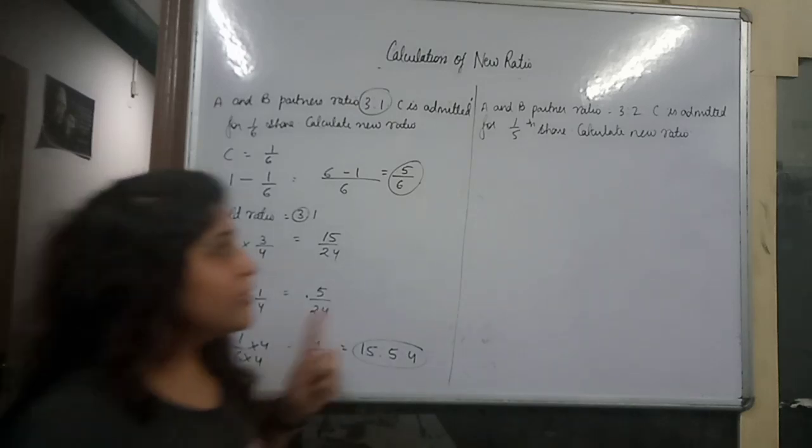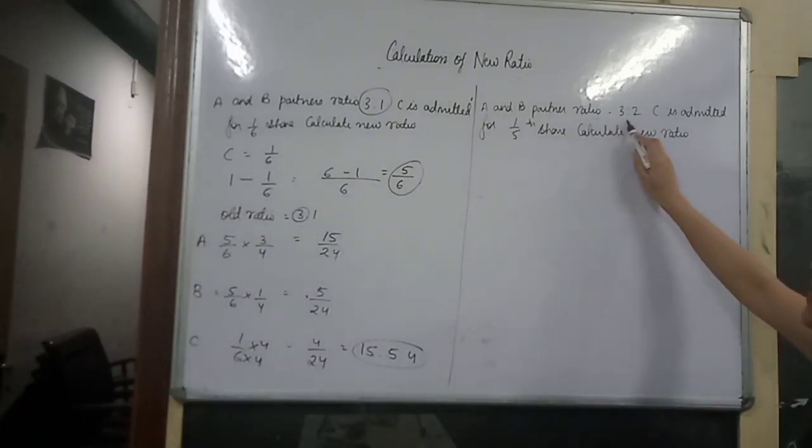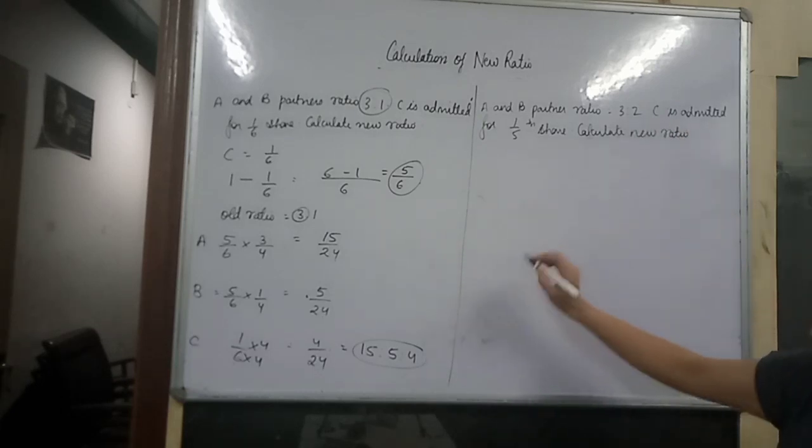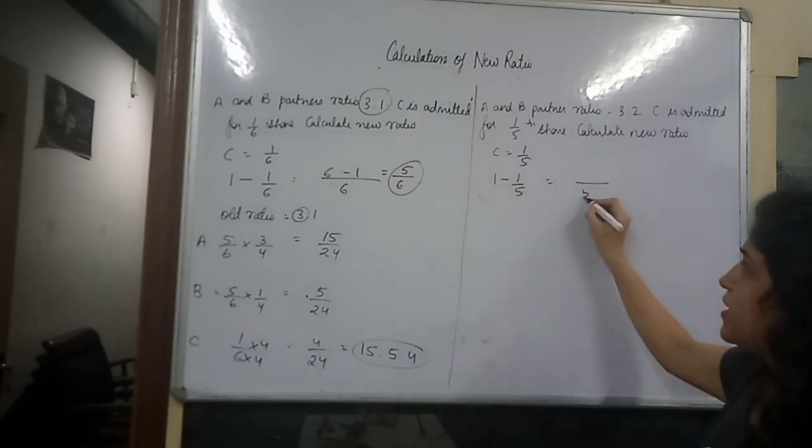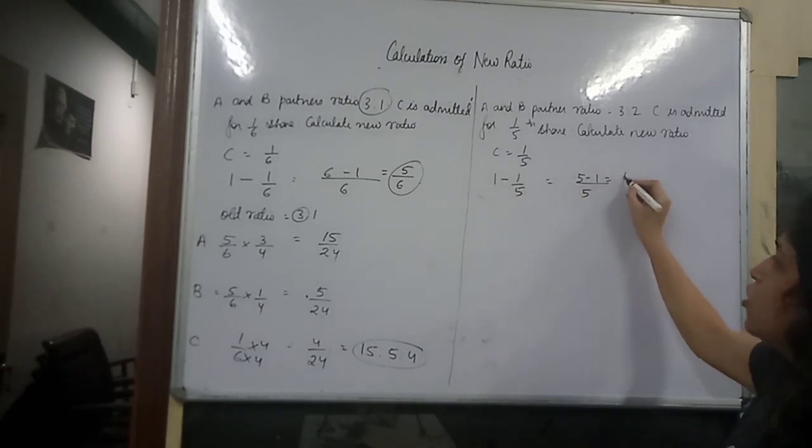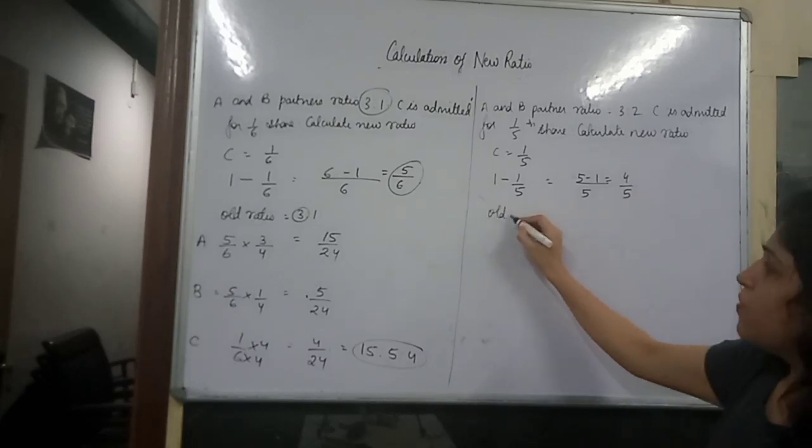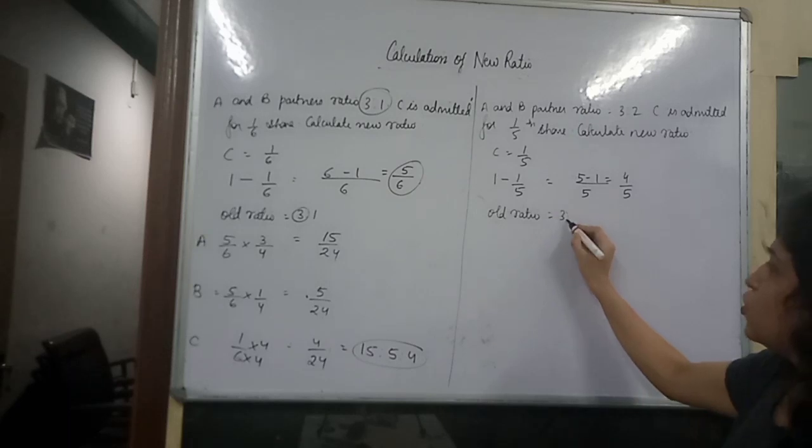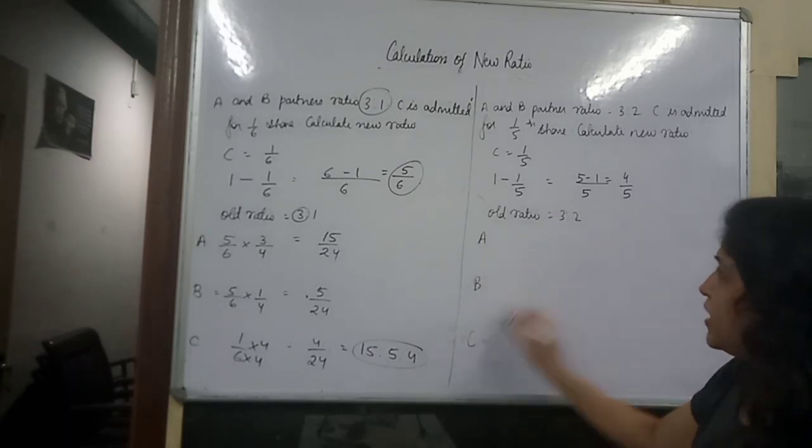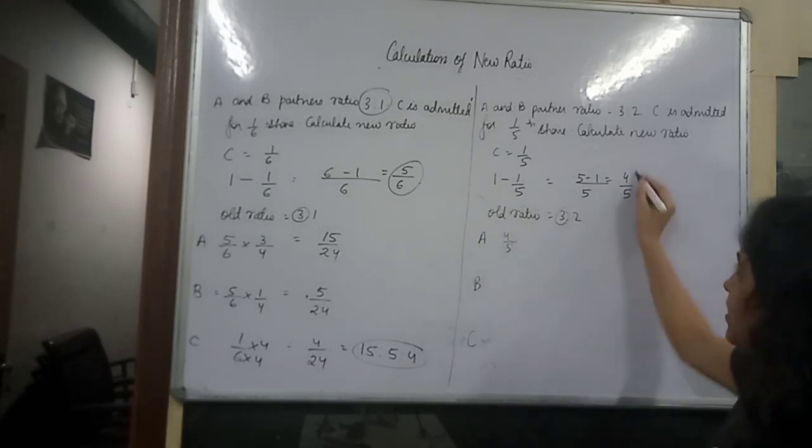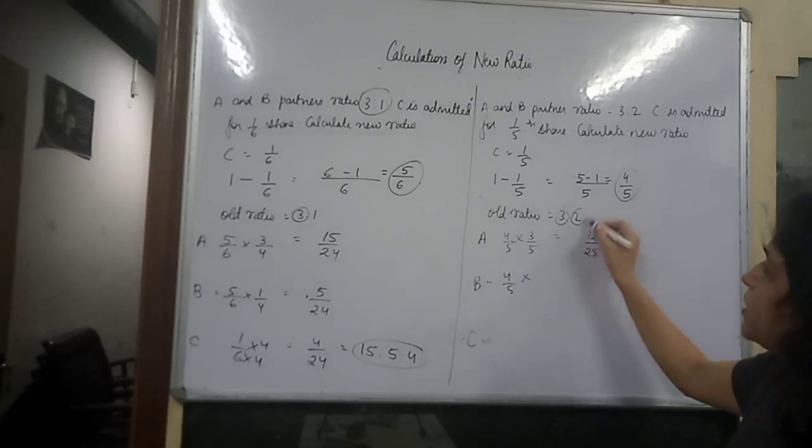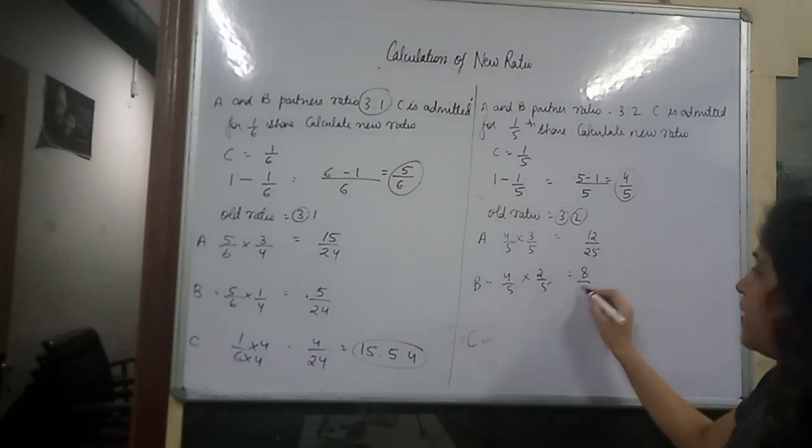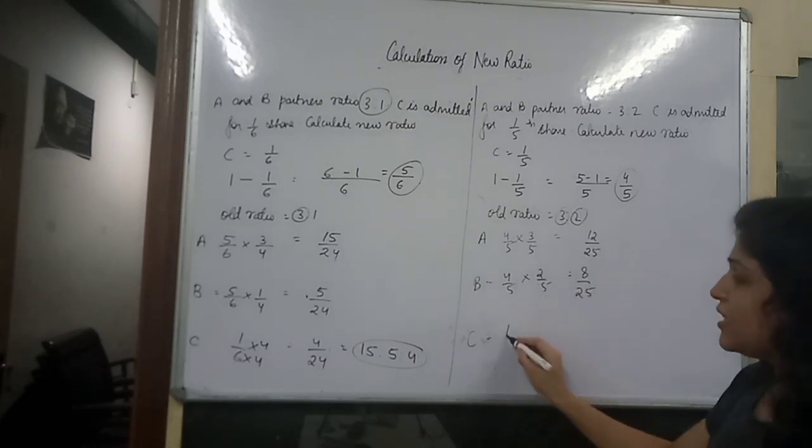Okay, see this question. A and B partners ratio 3 is to 2, C is admitted for 1/5th share, so C share 1 by 5. 1 by 5 minus gives 4 by 5. Old ratio 3 is to 2, so we will get A, B and C. A is 4 by 5 into 3 by 5, which is 12 by 25. B ratio is 2 by 5, 8 by 25. C is 1 by 5.